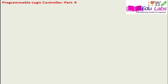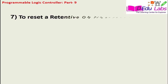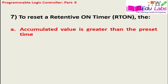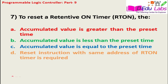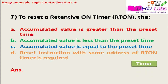Question number seven: to reset the retentive on timer RTON, which option is correct? Option A: accumulated value is greater than the preset time. Option B: accumulated value is less than the preset time. Option C: accumulated value is equal to the preset time. Option D: reset instruction with the same address of the retentive on timer is required. The answer is option D — a reset instruction with the same address of the retentive on timer is required.